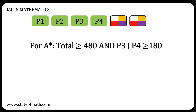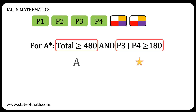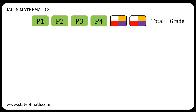For an IAL in mathematics, the total UMS must be at least 480, and the total of the P3 and P4 units must be at least 180. You can think of this as two conditions: one for the A and one for the star. Both are needed for an A-star.